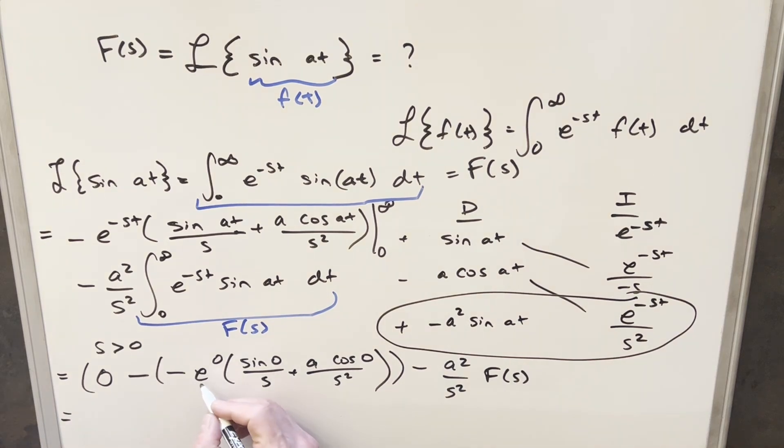Then we'll try to simplify this thing, e to the zero is just one. Minus times minus gives me a plus here. Sine of zero is just zero, so that's going away. But cosine of zero, this is just one. So out of this whole mess here, all we have left is a over s squared. And then we have this minus a squared over s squared F of s.